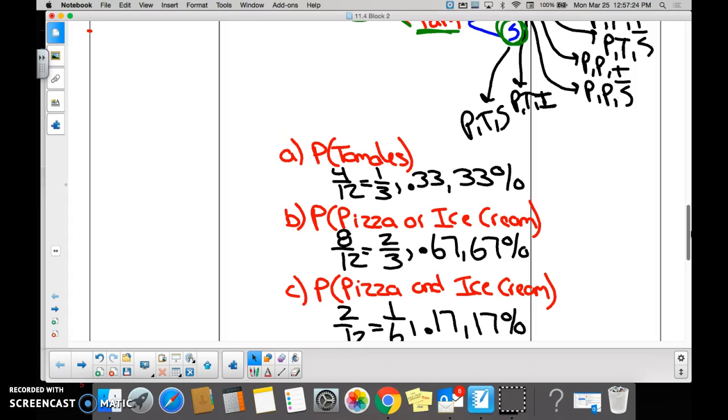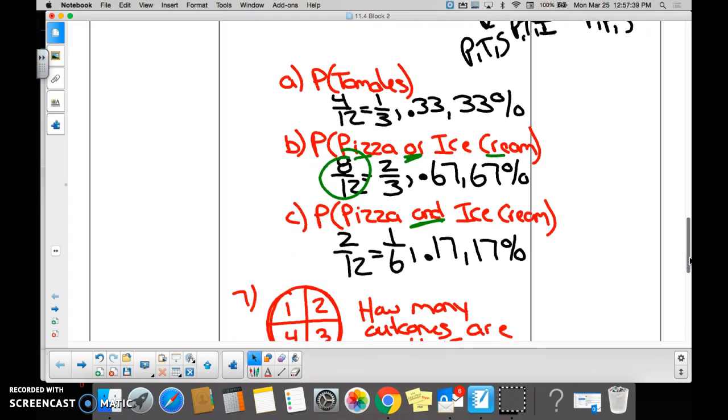Is there a difference between the word 'or' and 'and'? Or means you can order pizza or ice cream—that happens eight out of twelve times on the menu. They don't have to be together. But if we said what's the probability of ordering pizza and ice cream, it only happens two out of twelve times because the pizza and the ice cream have to be on the same exact choice. 'And' means together; 'or' means separate. Any questions?